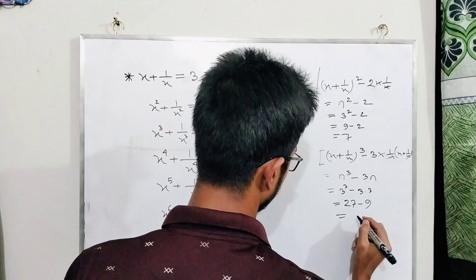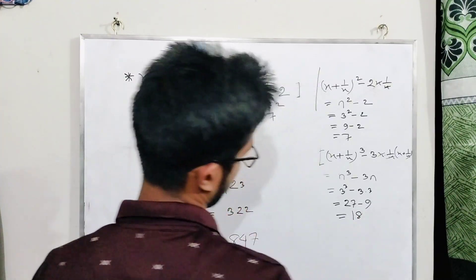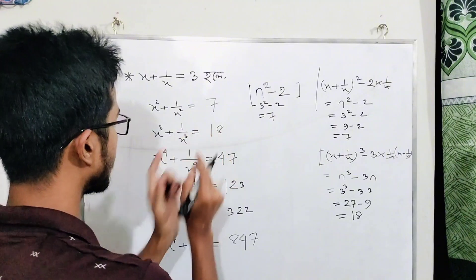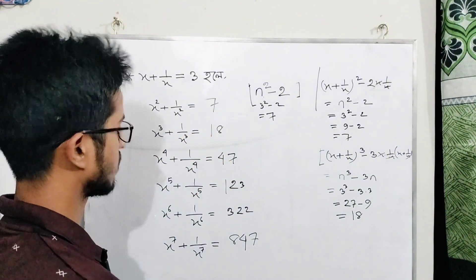That equals twenty-seven minus nine, which equals eighteen. So x cube plus one by x cube equals eighteen.